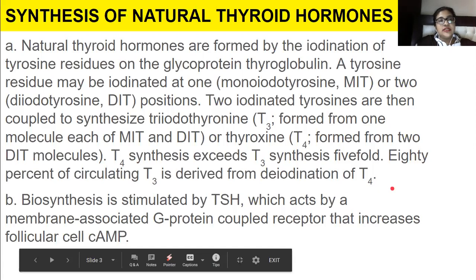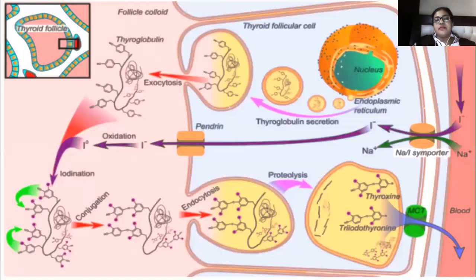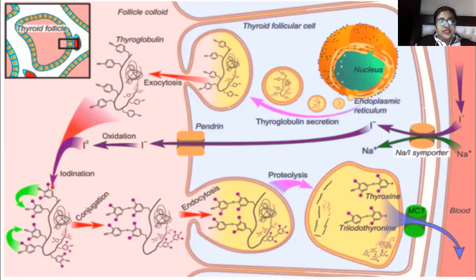Let's talk about the synthesis of natural thyroid hormone. Iodine ion enters the thyroid follicular cell through a symporter — two ions entering together, iodine along with sodium. Inside the thyroid gland, the endoplasmic reticulum produces proteins, and then conjugation with iodine occurs, followed by endocytosis.